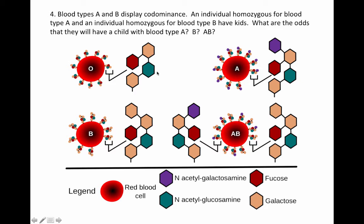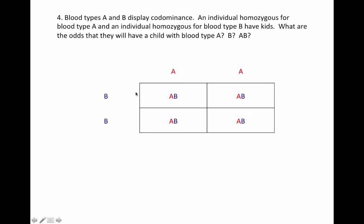An individual homozygous for blood type A means they're AA, and an individual homozygous for blood type B means they're BB, and they have kids. We can use Punnett squares. You'll sometimes see symbols like I-superscript-A and I-superscript-B and a little i for blood type O, but I'm not going to use that because I find it a bit confusing. In this cleaner format: our individual homozygous for blood type A can only contribute allele A, and the person homozygous for blood type B can only contribute allele B. So 100% of their kids are going to be AB — there's a 0% chance of blood type A and a 0% chance of blood type B.